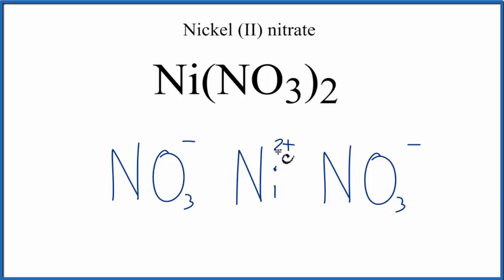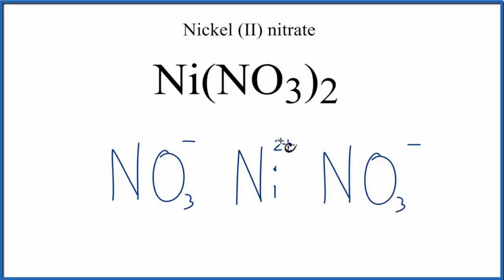So the nickel lost two electrons — one to this NO₃ group and another to this NO₃ group. Since it lost electrons and electrons are negative, now it's positive 2. The NO₃ gained an electron, so it's negative.